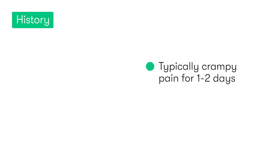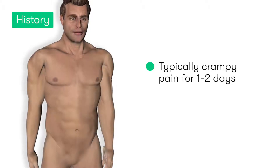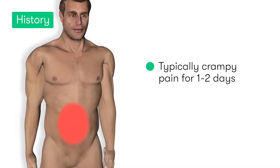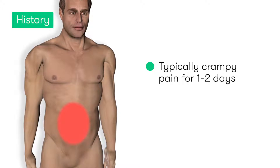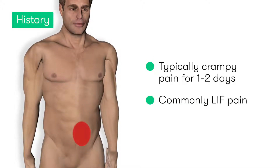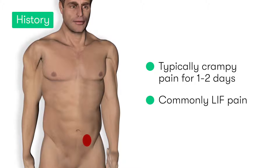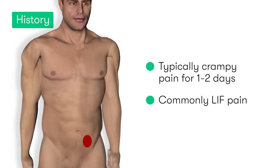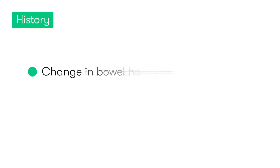So how does diverticulitis present? Well, typically the patient complains of crampy abdominal pain that worsens over 24 to 48 hours. Reflecting the fact that diverticular disease can affect any part of the colon, the patient may complain of pain anywhere in the abdomen; however, most commonly they describe pain in the left iliac fossa.